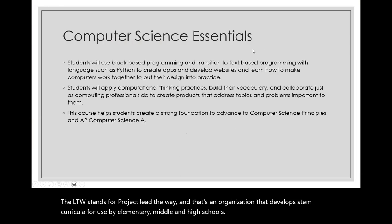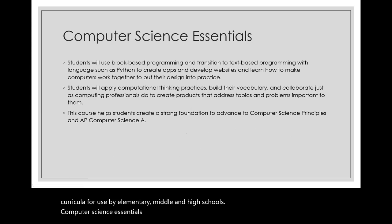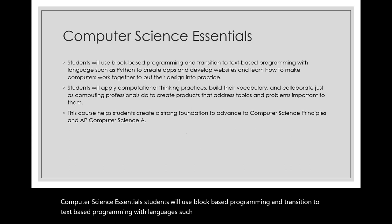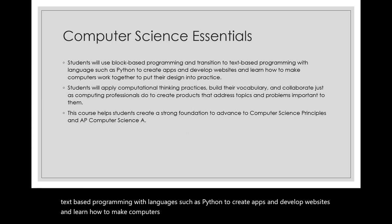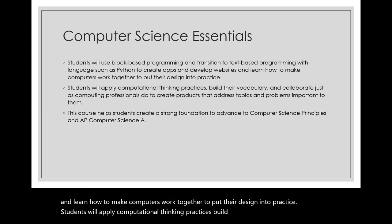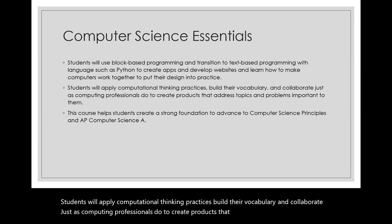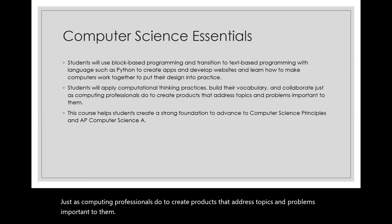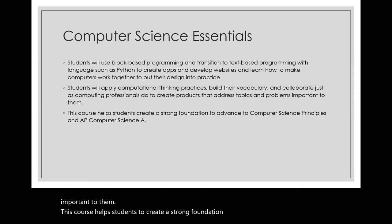Computer Science Essentials: students will use block-based programming and transition to text-based programming with languages such as Python to create apps, develop websites, and learn how to make computers work together to put their design into practice. Students will apply computational thinking practices, build their vocabulary, and collaborate just as computing professionals do to create products that address topics and problems important to them. This course helps students create a strong foundation to advance to Computer Science Principles and AP Computer Science A.